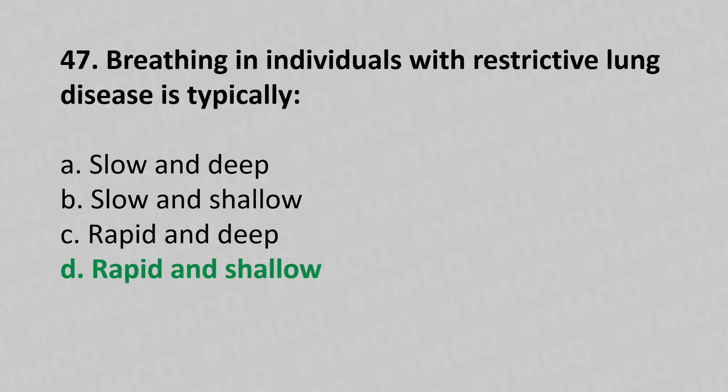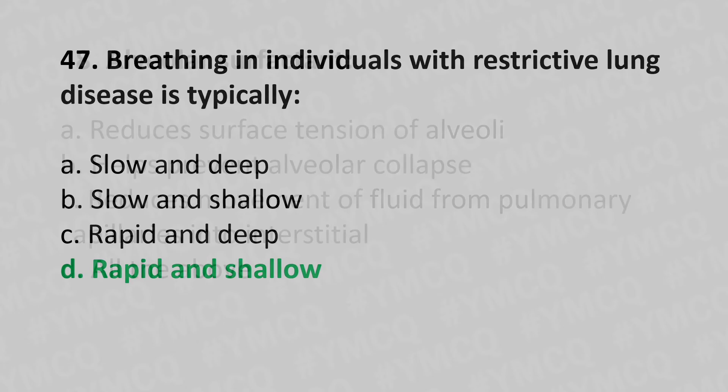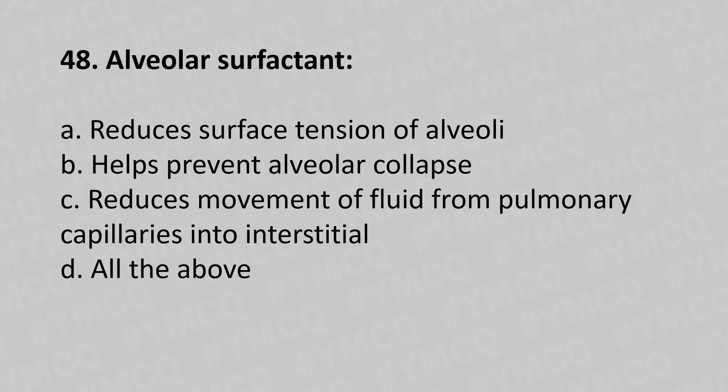Now let's move to question number 48. Alveolar surfactant. Option A: Reduces the surface tension of the alveoli. Option B: Helps prevent alveolar collapse. Option C: Reduces the movement of fluid from pulmonary capillaries into the interstitium. Option D: All of the above. And the answer is Option D, all of the above.